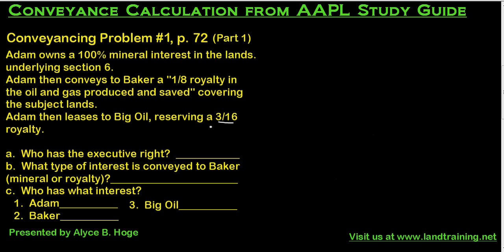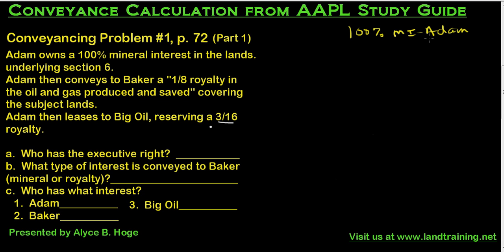Let's begin by reading the problem together. It says that Adam owned a 100 percent mineral interest in the land underlying section six. So he has a 100 percent mineral interest. In my notes I'm just going to write 100 percent for Adam.